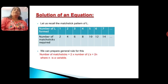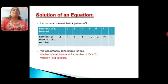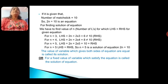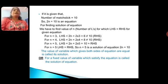For this, let us recall the matchstick pattern of L. In the matchstick pattern of L, we find the number of matchsticks for different L patterns. The number of matchsticks for 1 L-pattern is 2, for 2 L-patterns is 4, for 3 L-patterns is 6, and so on. So we prepare the general rule: number of matchsticks equals twice the number of L's, that means 2N, where N is a variable. Now, if it is given that the number of matchsticks equals 10, then 2N = 10 is an equation.